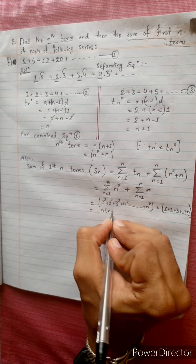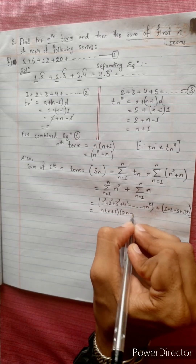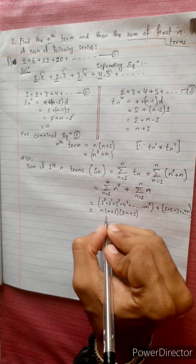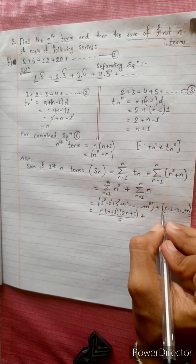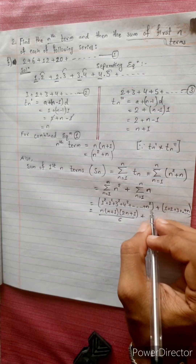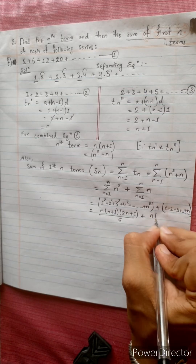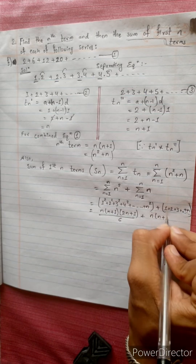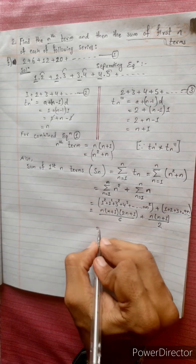n into n plus 1, bracket 2n plus 1, divided by 6 — that is the sum of squares of first n natural numbers — plus the sum of first n natural numbers, which is the formula n(n+1) divided by 2.